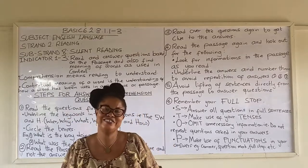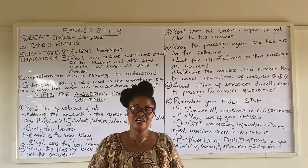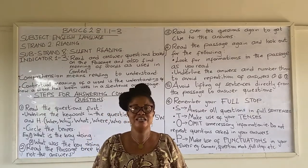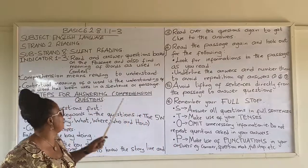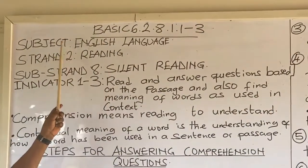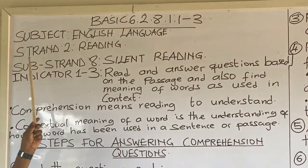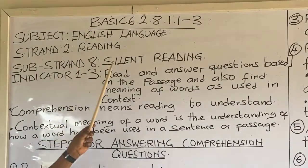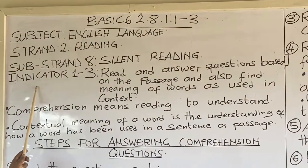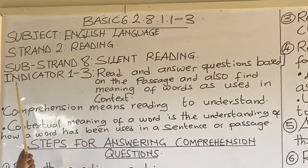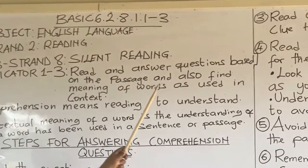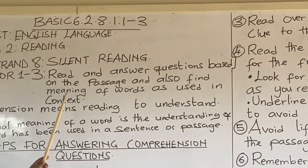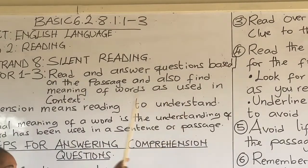Hello. Welcome to Little Smalls International School Basic States Online Tutorials. Today's tutorial is on English language, taking from strand two, reading, sub-strand eight, silent reading. Indicator one to three: read and answer questions based on the passage and also find meaning of words as used in context.